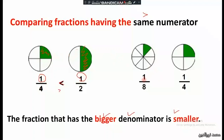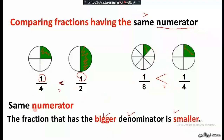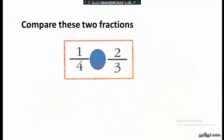Another example: 1 over 8 and 1 over 4 have the same numerator. We look at the denominator — 8 is greater than 4, so we invert the sign: 1 over 4 is greater than 1 over 8. The colored parts confirm this. With the same numerator, the bigger the denominator, the smaller the fraction.